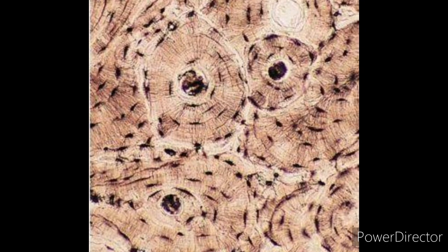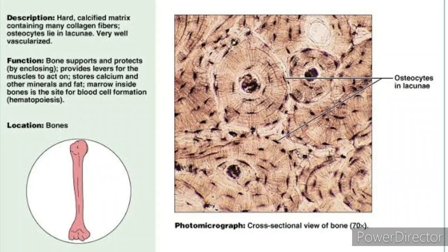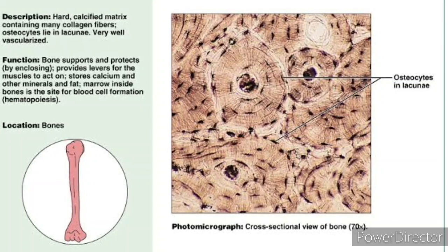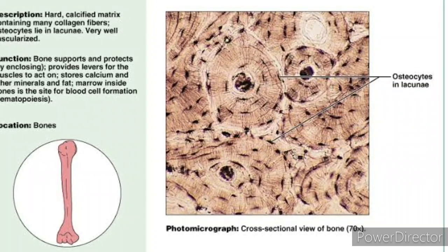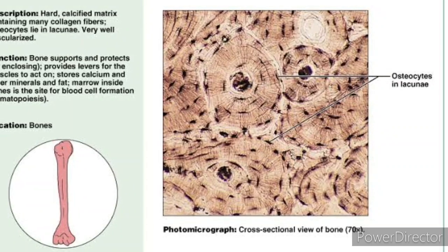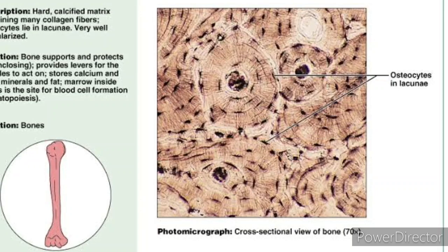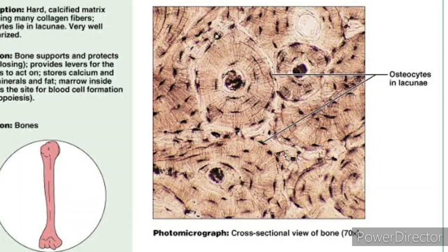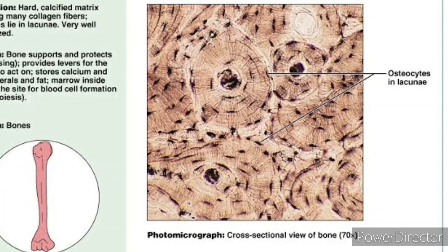Bone tissue forms the framework and gives support to the body. It forms the skeletal system in several vertebrates. Bone is made up of calcium phosphate and calcium carbonate. These salts are secreted by cells called osteocytes, which are present in the central hollow portion of the bone, called the bone marrow.